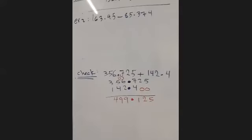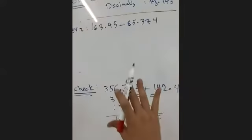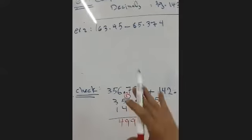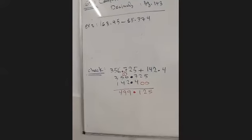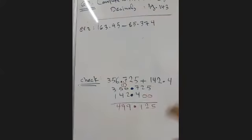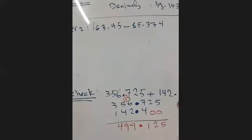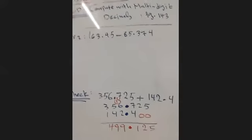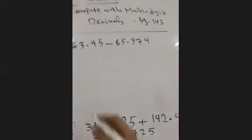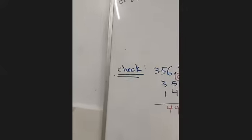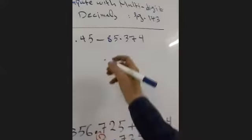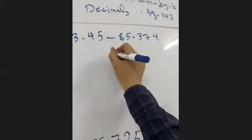We'll deal with subtraction the same way as addition — same alignment, same conditions. Put the decimals over each other, then align, then subtract normally. Here I'll put the two decimals over each other first, then align the digits: 163.45 on top, and 85.374 below.